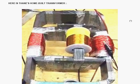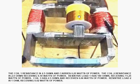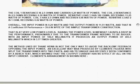The result of doing that is quite spectacular. Here is Thane Hines' home built transformer. As you can see it's lashed together. The coil 1 resistance is 2.5 ohms and it carries 0.29 watts of power. The coil 2 resistance is 2.9 ohms, receiving 0.18 watts of power. Resistive load 1 has 180 ohms receiving 11.25 watts of power. Coil 3 has 2.5 ohms and receives 0.06 watts of power. And its resistive load is 1 ohm receiving 0.02 watts of power. Now overall, the input power is 0.29 watts and the output power is 11.51 watts. Now that's a coefficient of performance of 39.6 in spite of the very simple transformer construction.